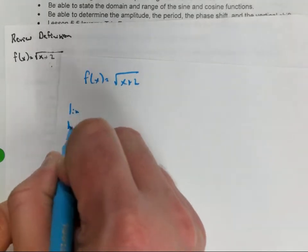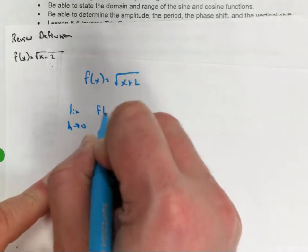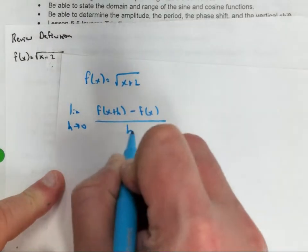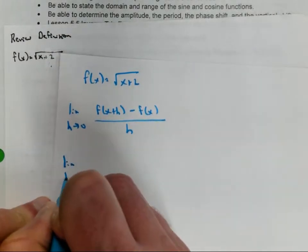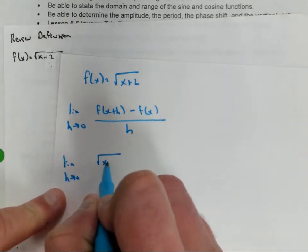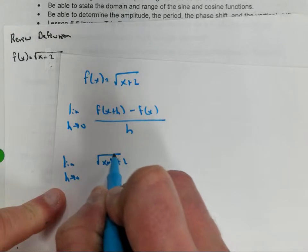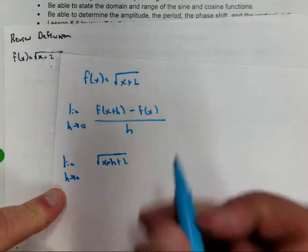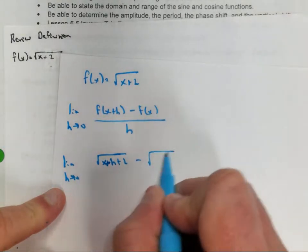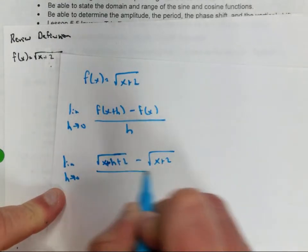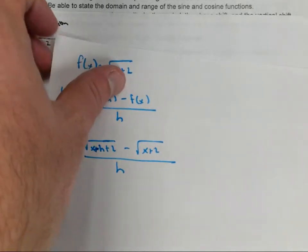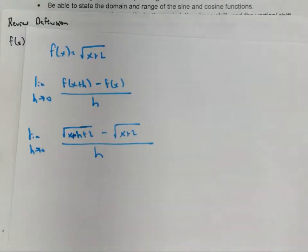Limit as h approaches zero of f(x plus h) minus f(x). If I take x plus h and plug it in, I get that expression. Minus: if I take x and plug it in, I get this. All over h. I take zero, plug it in — I get zero in the denominator. I've got to rationalize the denominator.